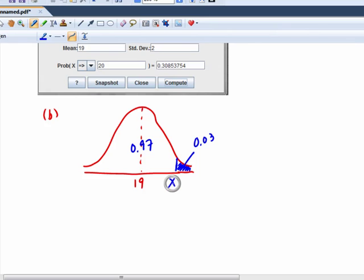So we want to find the value of x such that the area to the right is 0.03. If we're doing this by hand, we have to go into our table, look for an area closest to 0.97, find the z value that corresponds to an area of 0.97, and then use this x equals mu plus z sigma formula.